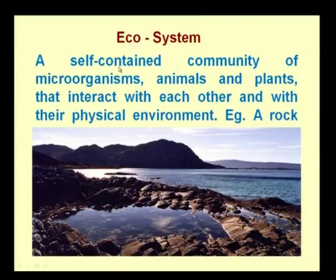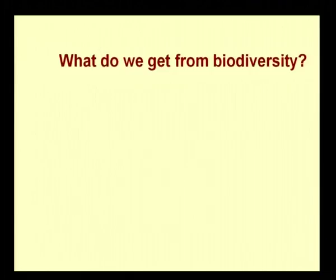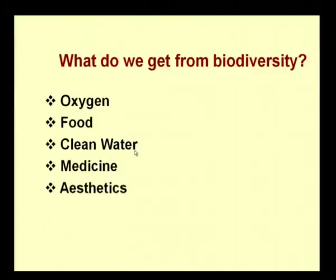An ecosystem is a self-contained community of microorganisms, animals, and plants that interact with each other and with their physical environment — for example, a rock ecosystem, which contains microorganisms, animals, and plants and is self-sustaining. From biodiversity we get oxygen, food, clean water, medicine, and aesthetic value, among other things.